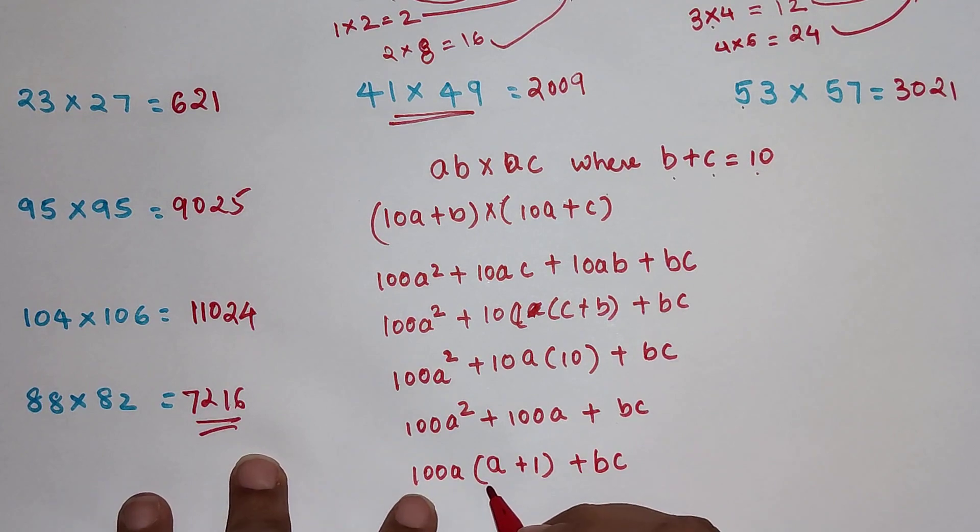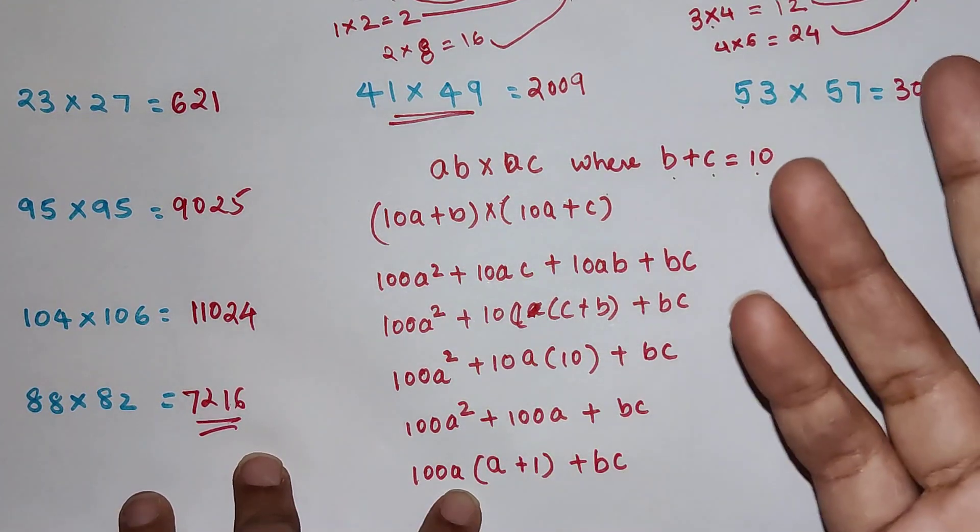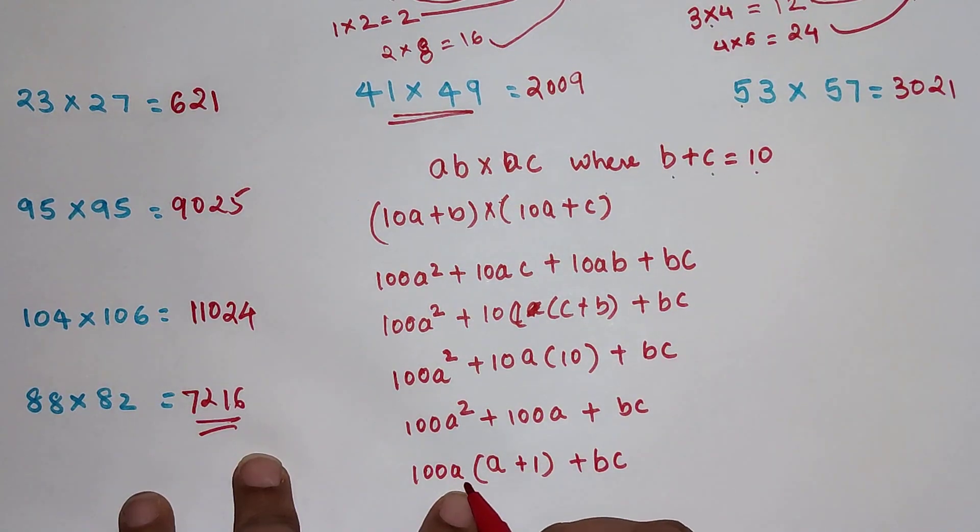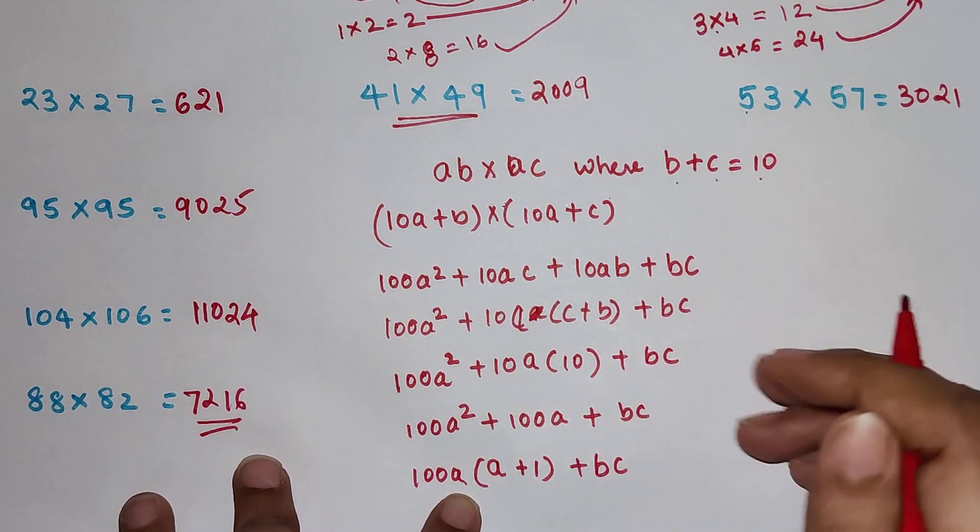So I hope you are now understanding the concept of multiplying the first digit with the number coming next to it. That is what A and the number which will come after A will be what? A plus 1. And then when you add this BC to it you get your final answer.